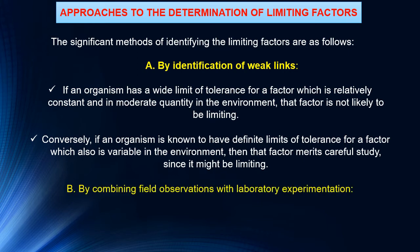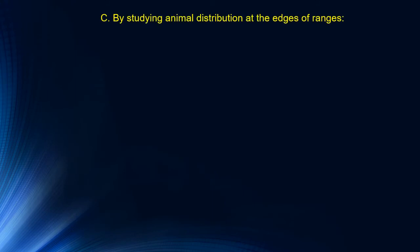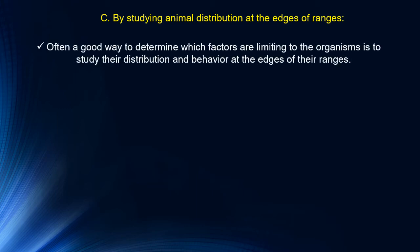The second method is combining field observation with laboratory experiments. Physical requirements may be well within the limits of tolerance, but organisms may still fail due to biological interactions between them. So field observation and laboratory work must go hand in hand, and if necessary, individuals have to be isolated from population and community. Another approach is studying animal distribution at the edges of their ranges. Often a good way to determine which factors are limiting is to study distributional behavior at range edges, where one or more environmental factors may undergo sudden or dramatic changes, thus setting up a natural experiment.